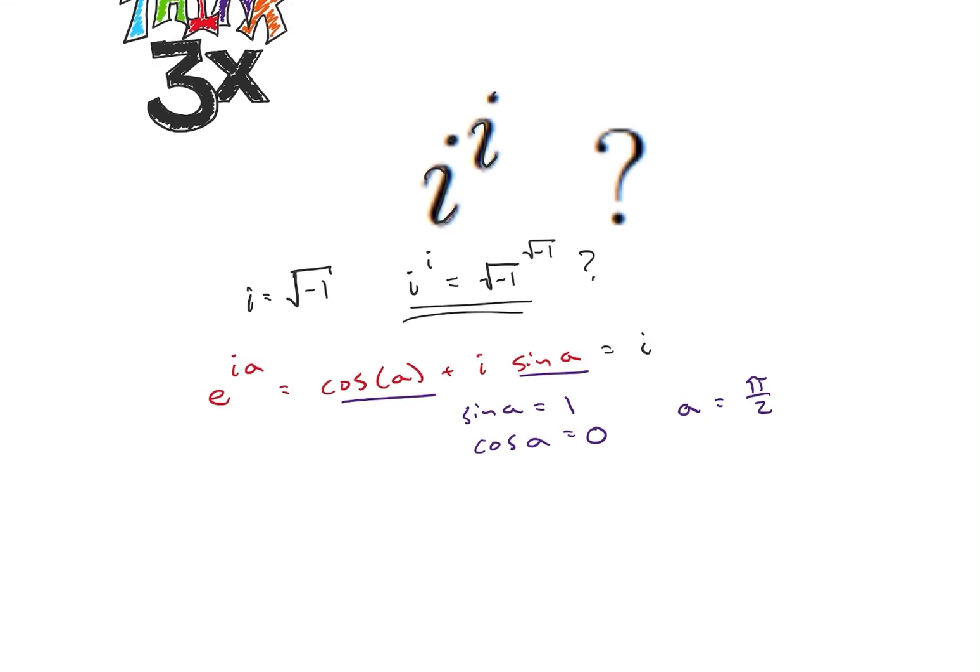Okay, so if a equals pi over 2, then I would have e to the pi over 2 times i.